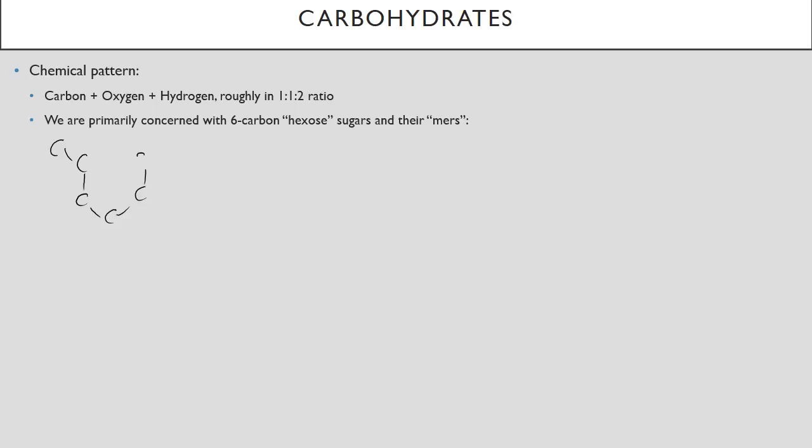Carbohydrates are the next most complicated set of molecules. Their chemical pattern takes the carbon and hydrogen pattern and adds oxygen. So we have carbon, oxygen, hydrogen roughly in a 1 to 1 to 2 ratio. In this class, we're primarily going to be concerned with 6-carbon hexose sugars and their mers, monomers, polymers, and dimers. So a stereotypical 6-carbon hexose is glucose. We've got a carbon backbone with an oxygen tying that carbon into a ring, and then we have an OH here, and an OH here, and an OH here, and again here, and again here. And this is glucose, often abbreviated just GLUE for short.